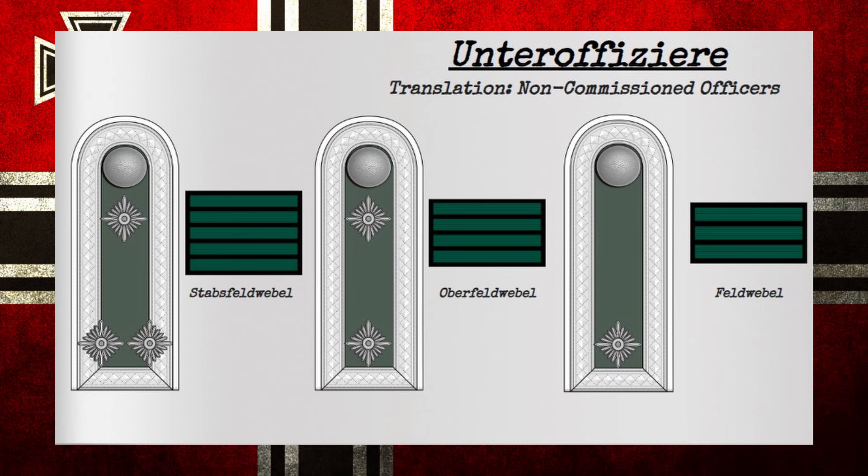The Oberfeldwebel, or Senior Fieldwebel, was comparable to a master sergeant or first sergeant. Its position would usually be similar to that of the title before — assisting an officer of a company in their daily affairs and in command — and wouldn't often be placed in a fighting role, although it could be depending on the branch of service. The rank of Feldwebel, or Fieldwebel, typically Senior or Technical Sergeant, would hold command normally over a group or squad of soldiers roughly from 4 to 14 men, though numbers could vary.